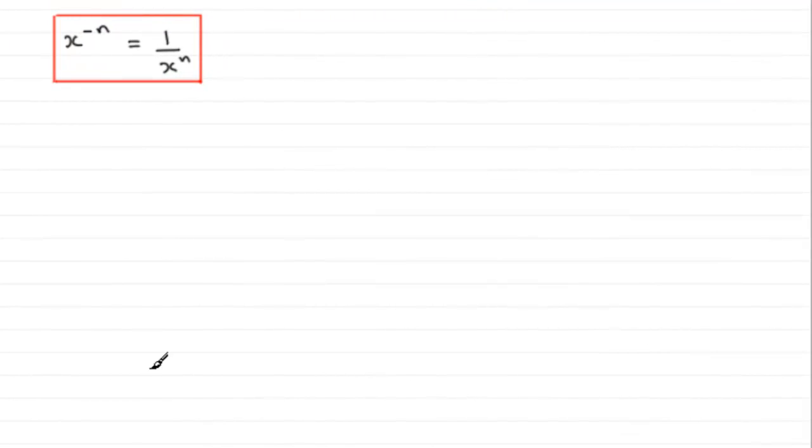Hi. Now in a previous tutorial I showed you that if you had any value, let's say call it x, to the negative power n, it was exactly the same as working out 1 divided by x to the positive value of n.